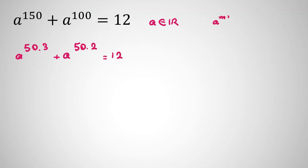We know that a to the power of m times n equals a to the power of m to the power of n. So first, we can say a to the power of 50 cubed plus a to the power of 50 squared equals 12.